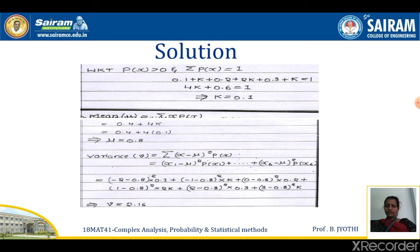The mean is calculated as Σ xi · p(xi), giving μ = 0.8. The variance is V = Σ(xi − μ)² · p(xi), expanding as (x1 − μ)²·p(x1) and so on. Substituting all values, we get V = 2.16.